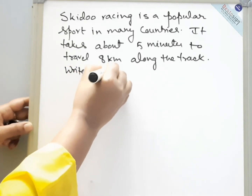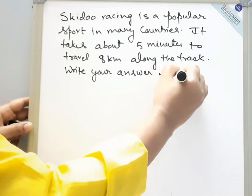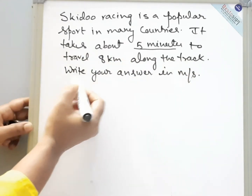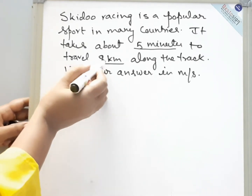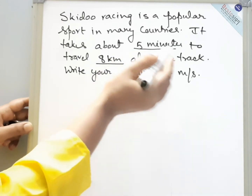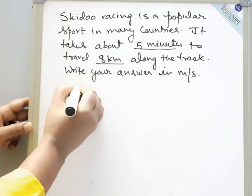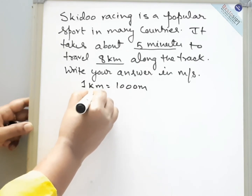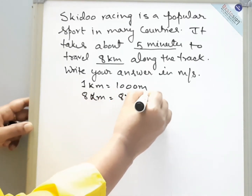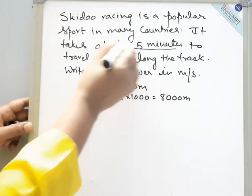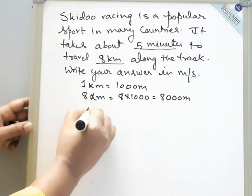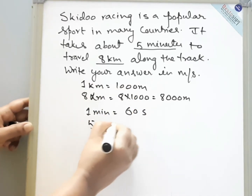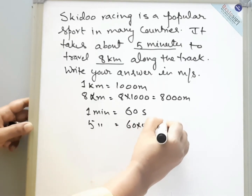As you can see, time is given in minutes and distance is given in kilometers. So now we will convert kilometers into meters and minutes into seconds. 1 kilometer is equal to 1000 meters, so 8 kilometers will be equal to 8 into 1000, that is 8000 meters. For minutes: we know that 1 minute is equal to 60 seconds, so 5 minutes will be equal to 60 into 5, that is 300 seconds.